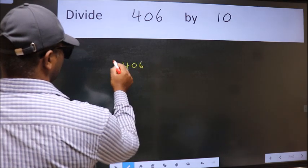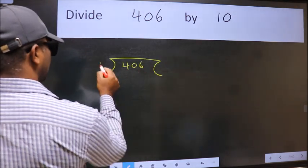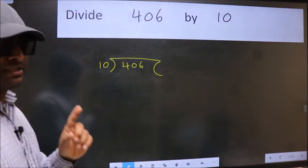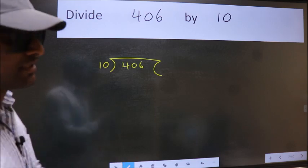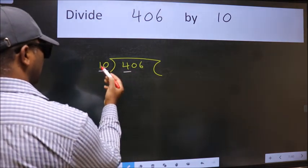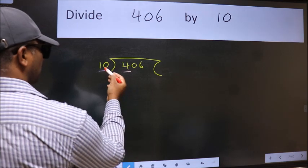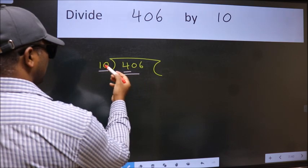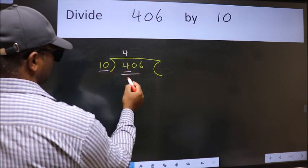406 here, 10 here. This is your step 1. Next, here we have 4 and here 10. 4 is smaller than 10, so take two numbers, 40. When do we get 40 in the 10 table? 10 times 4 is 40.